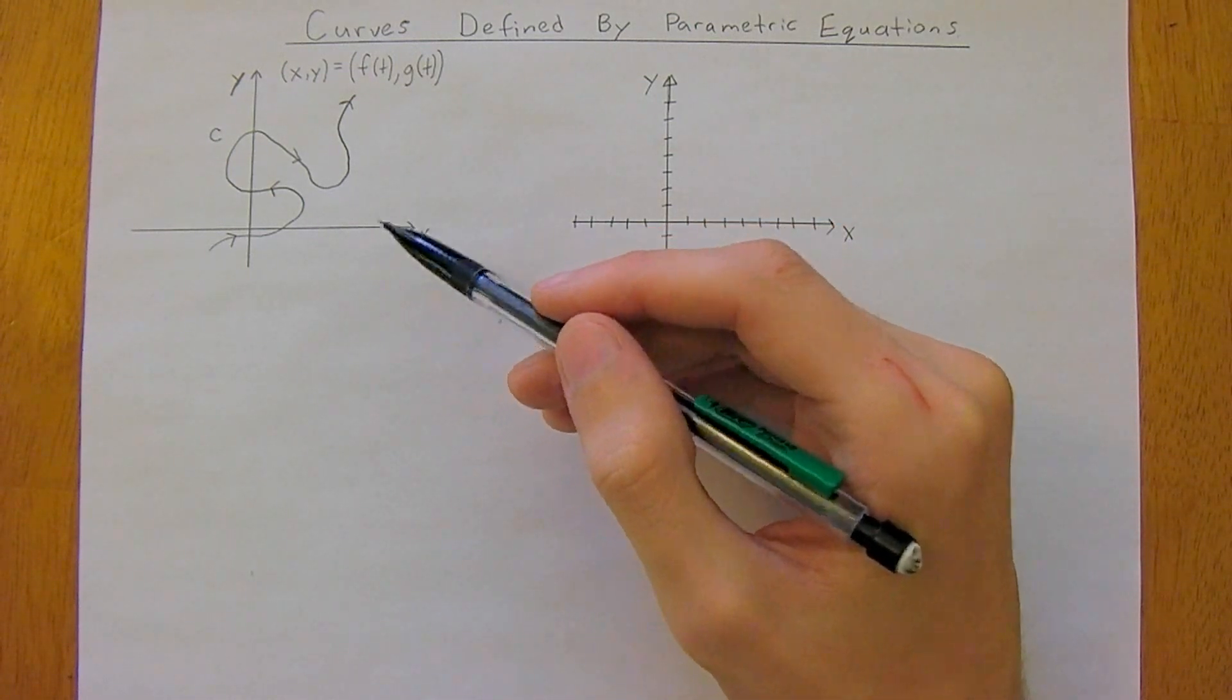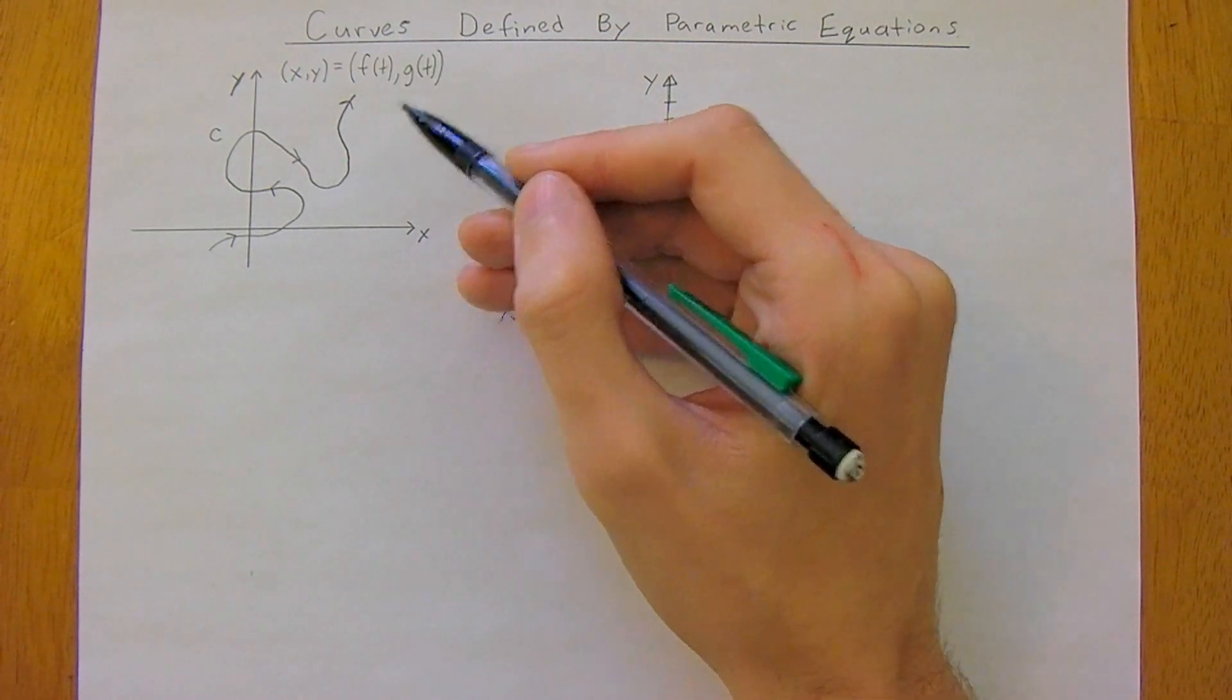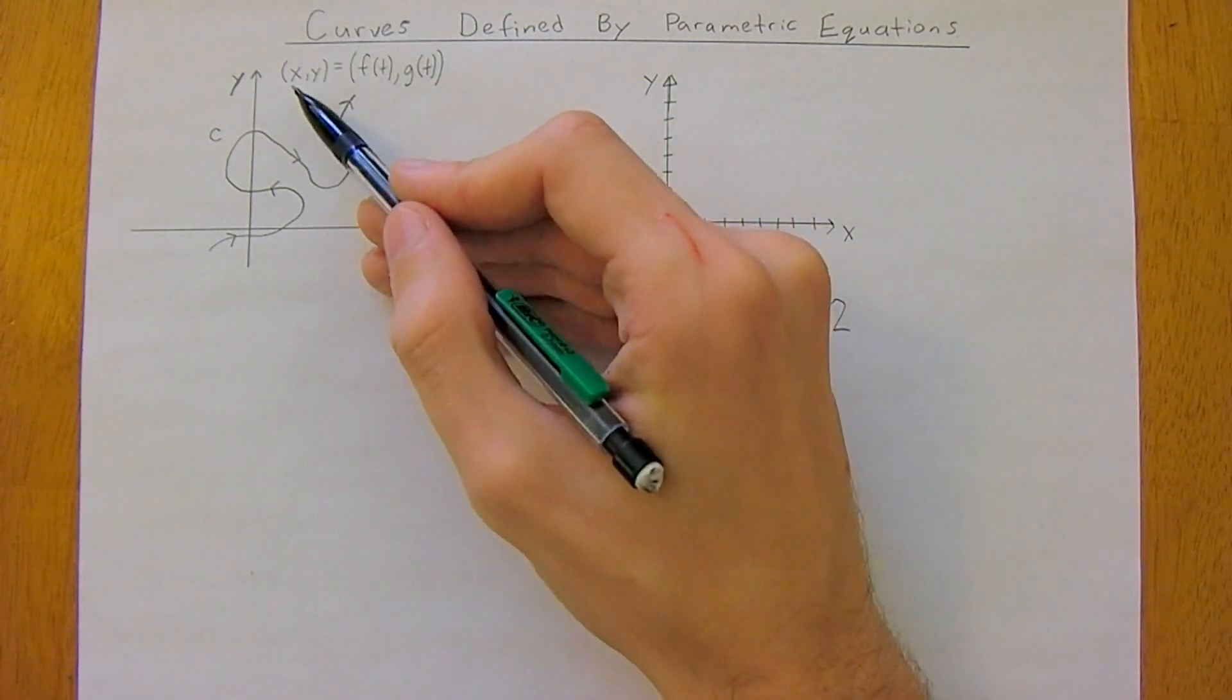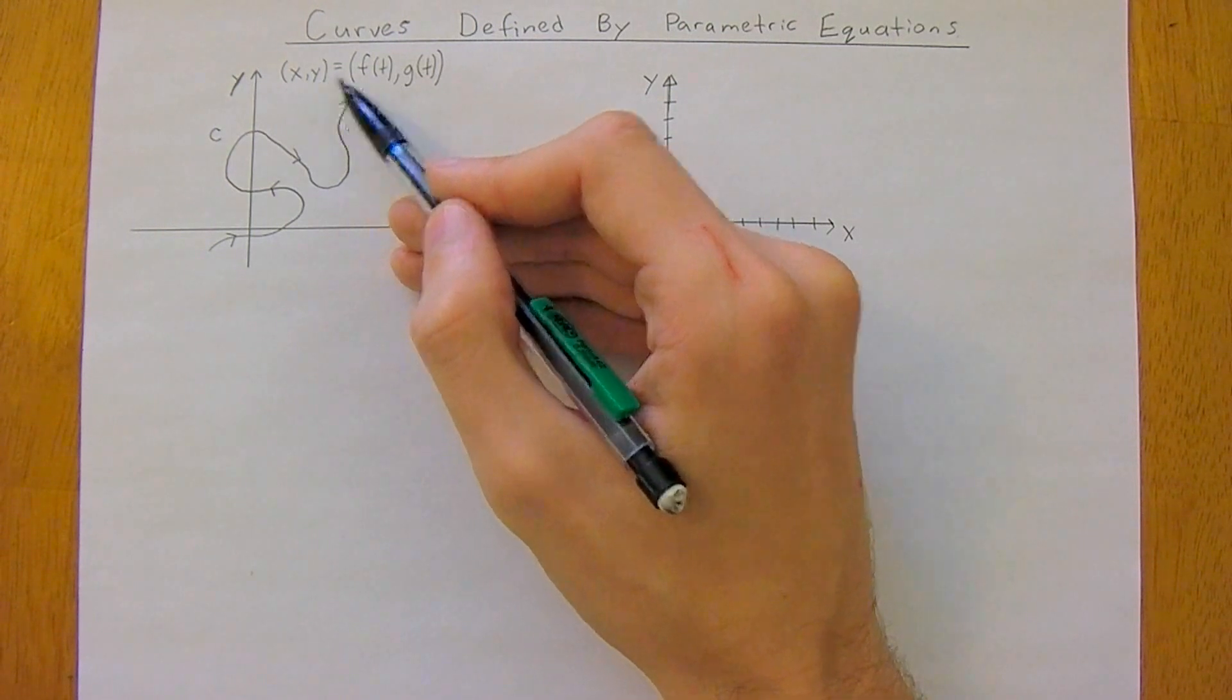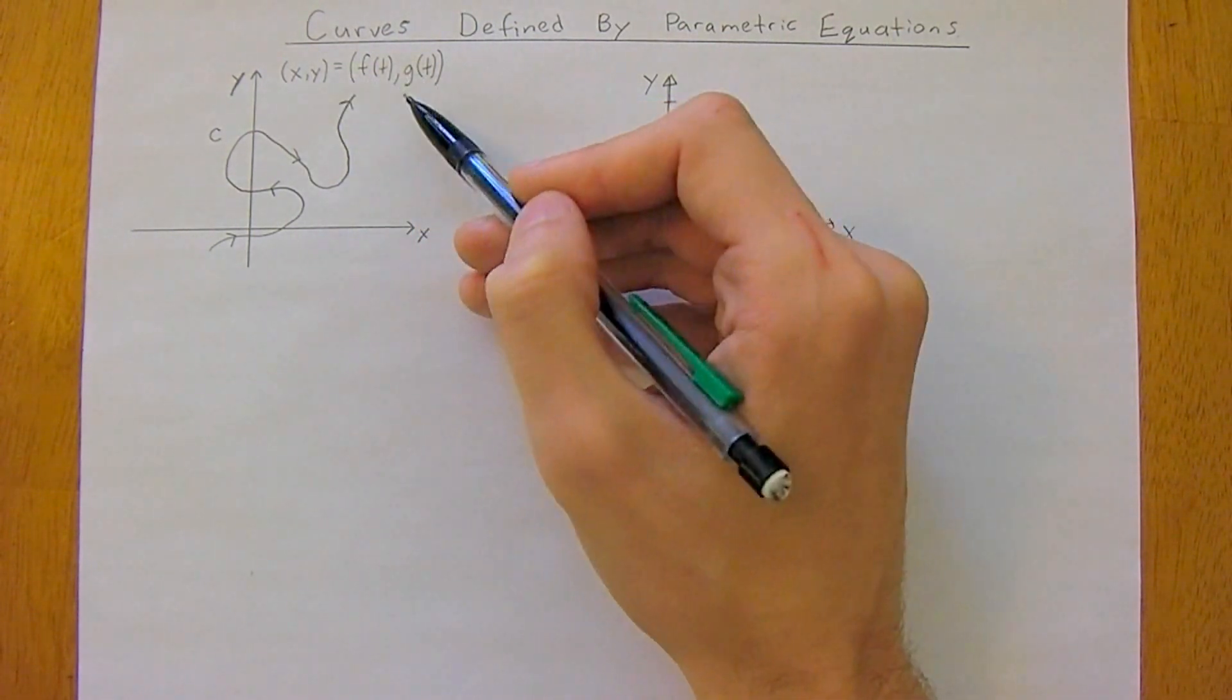But the x and y coordinates of the particle are functions of time now. This is the way we're going to start describing it. Instead of just x and y coordinates, we have f(t) and g(t).